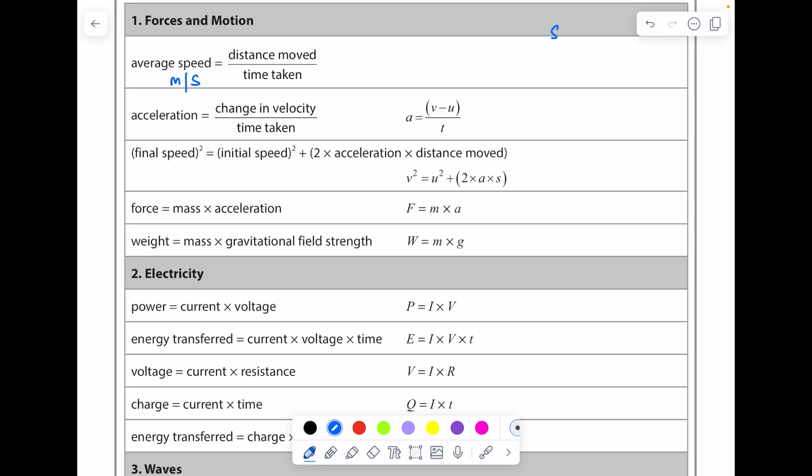Speed is an example of a scalar quantity, which means it has magnitude only and no direction. Distance will be given in meters, time in seconds, acceleration is meters per second squared. Change in velocity is meters per second, time taken is seconds. Velocity is a vector quantity, which means it has both a direction and a magnitude, but both speed and velocity have the same unit.